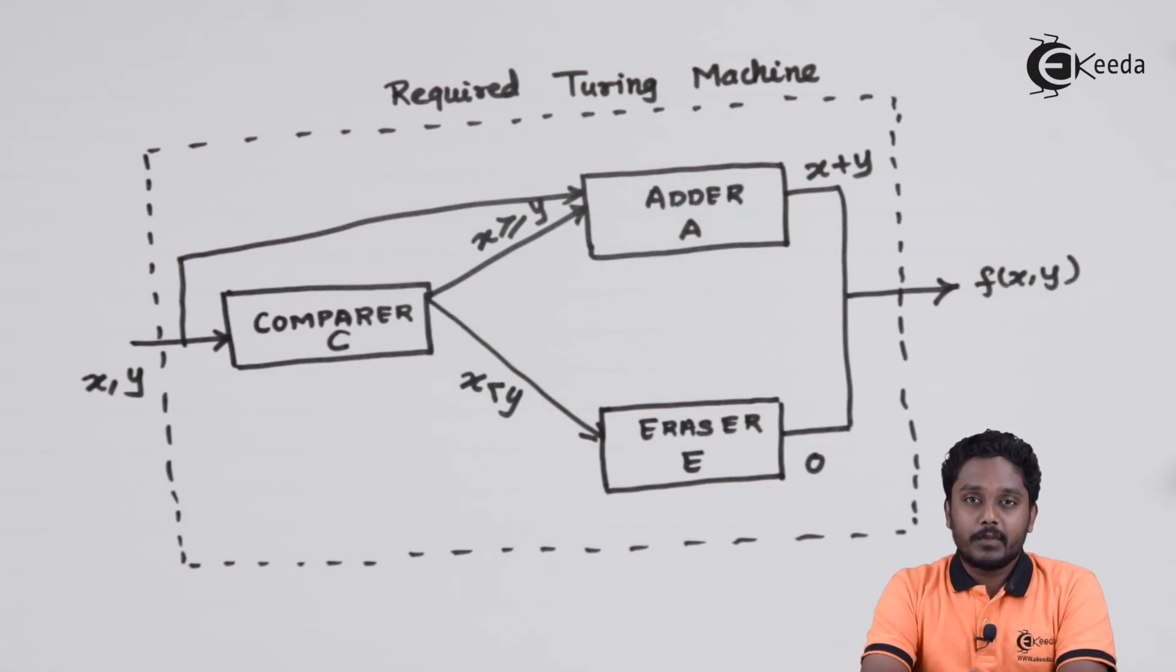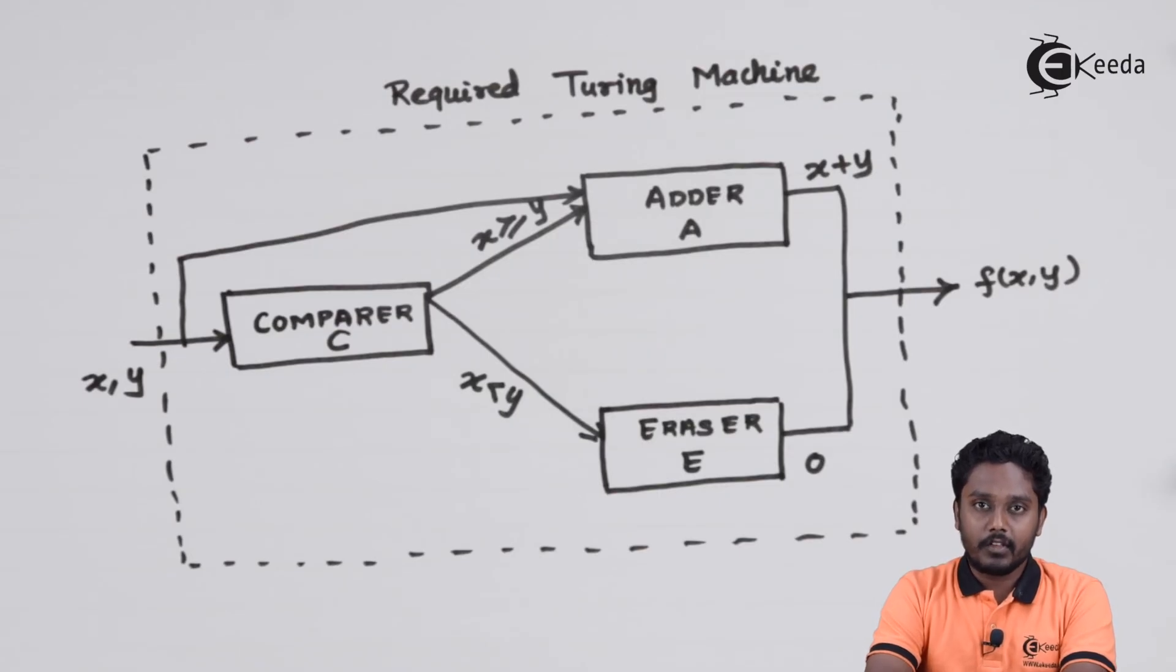Now, you can see that I have constructed the required complicated Turing machine using the three Turing machines: C, A, and E. We will see more questions on designing complicated Turing machines depending upon smaller Turing machines for various operations such as macro operations which are used in programming languages. Thank you for watching this video, stay tuned to Ikeda and do subscribe.